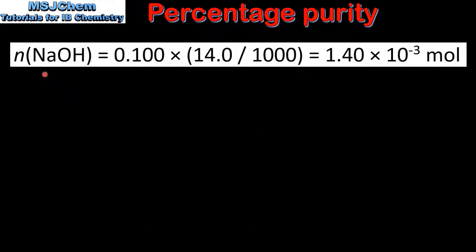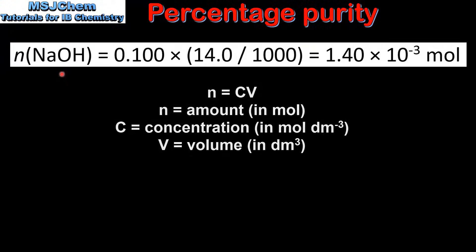The first step is to calculate the amount in moles of sodium hydroxide in the average titre. We use the equation n = CV. The concentration of sodium hydroxide is 0.1 mol per dm³. The average titre was 14.0 cm³, which we convert to dm³ by dividing by 1000. This gives us 1.40 × 10⁻³ moles.